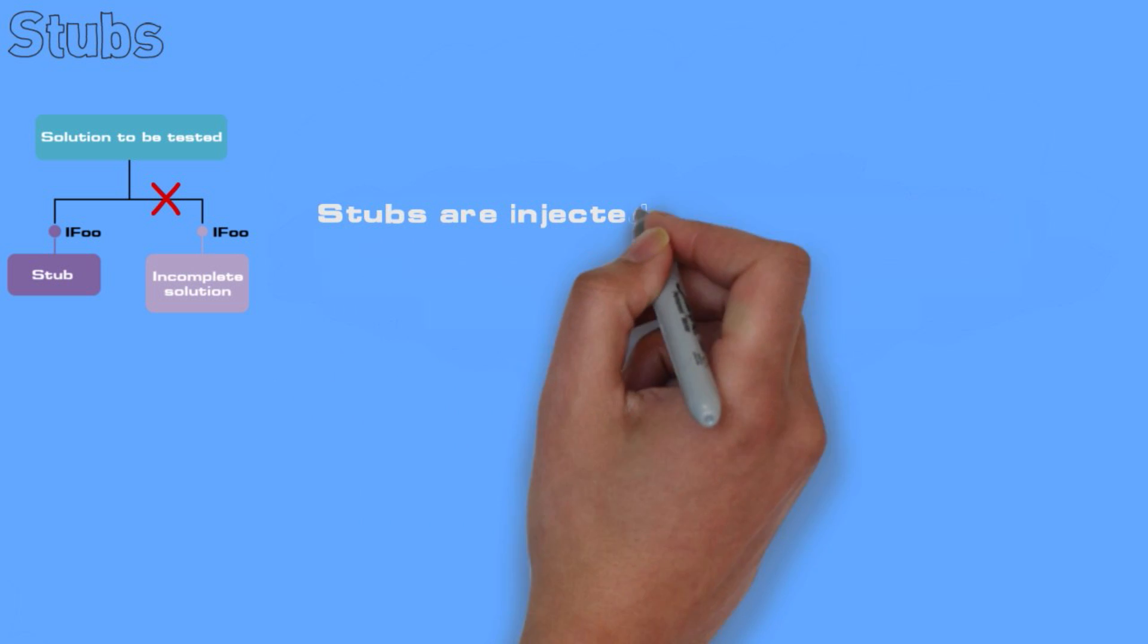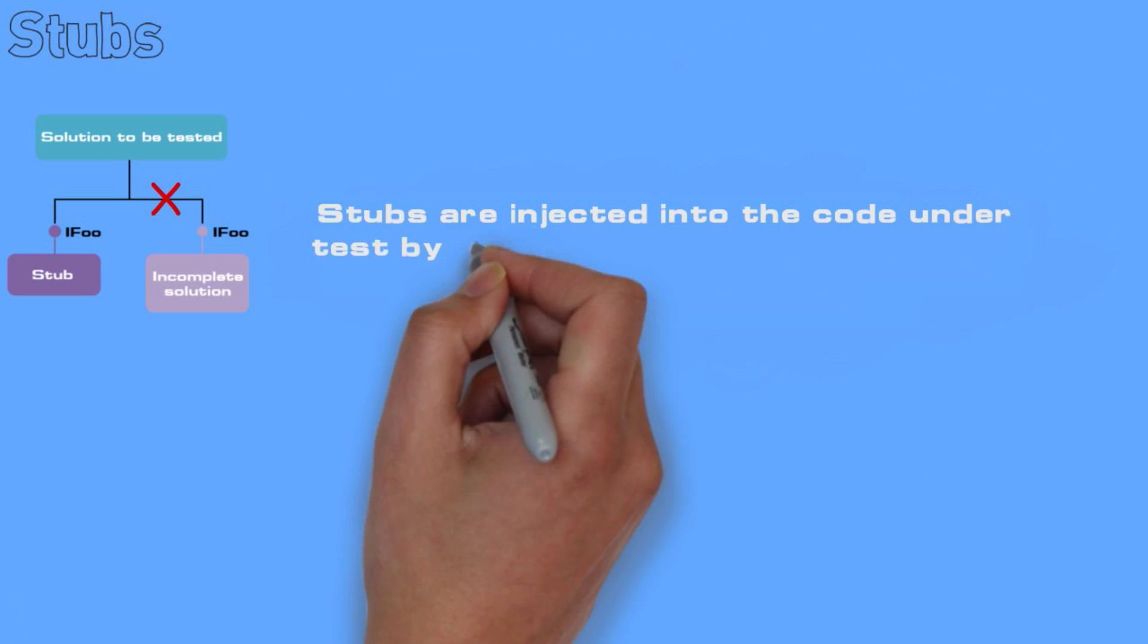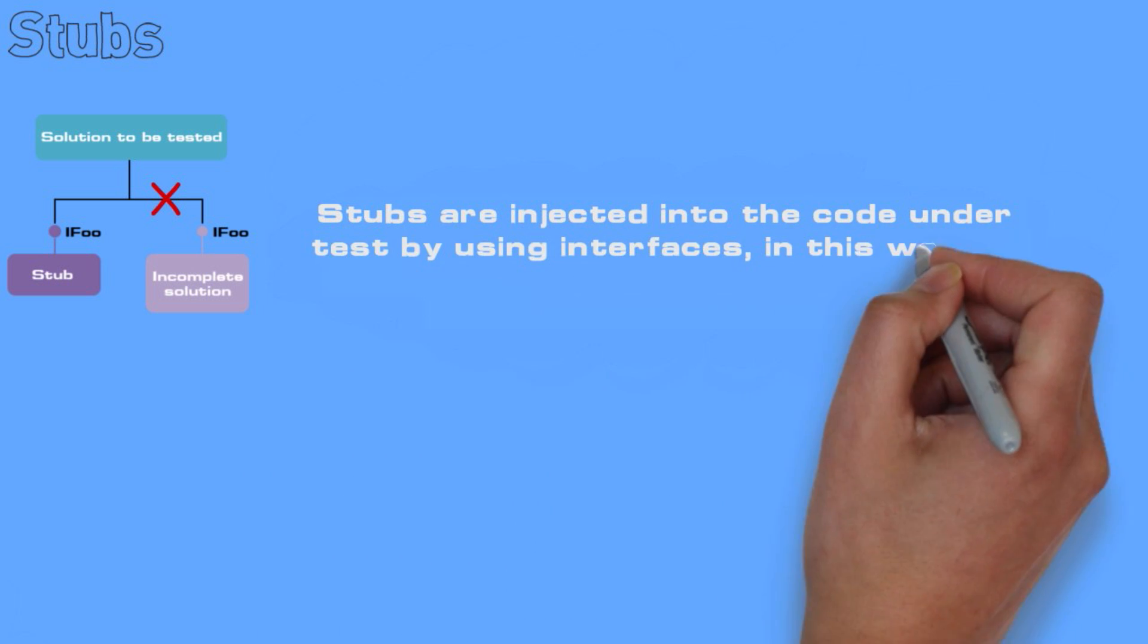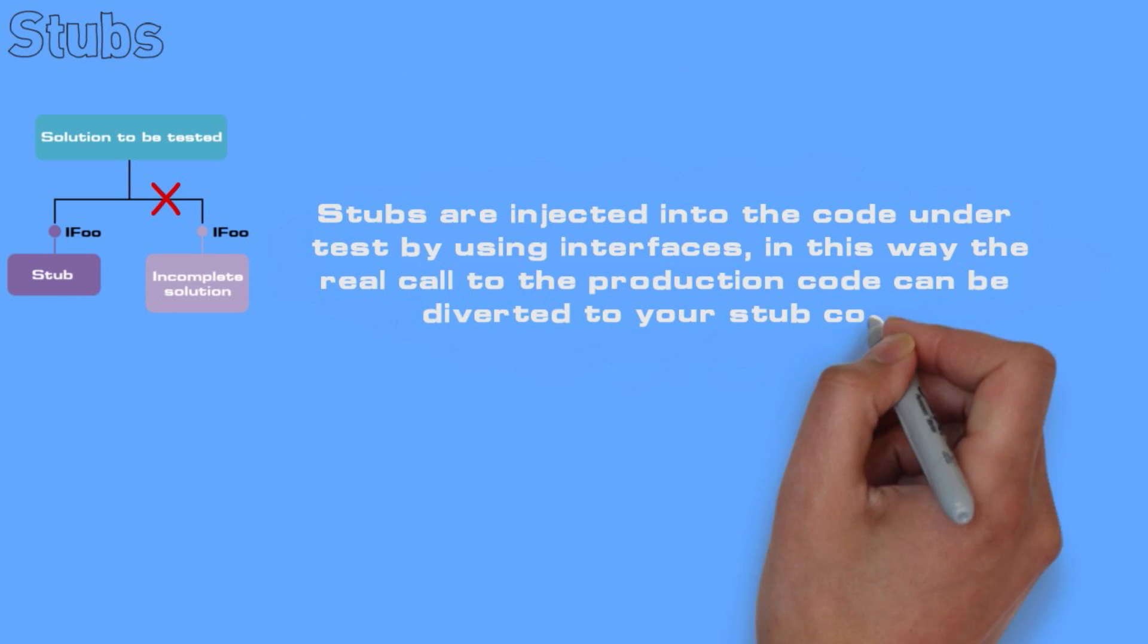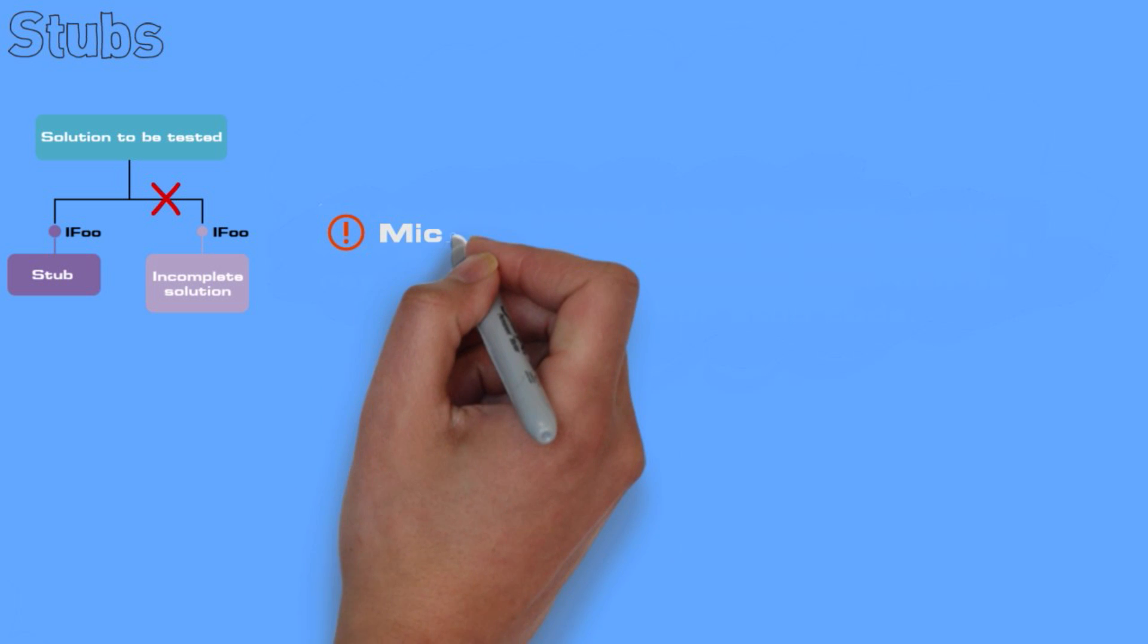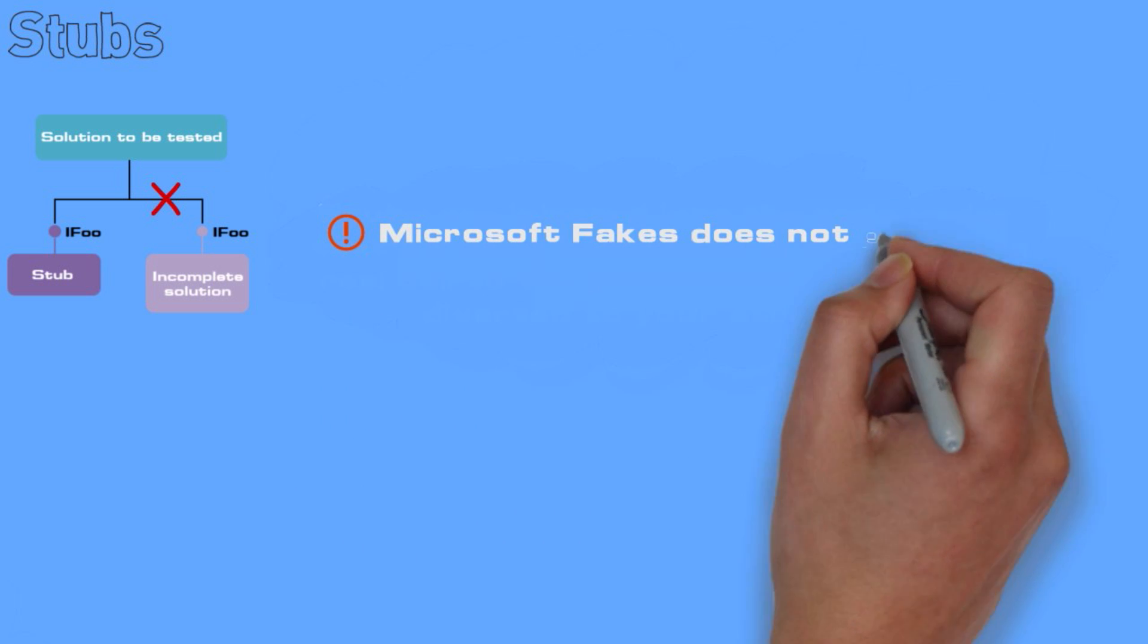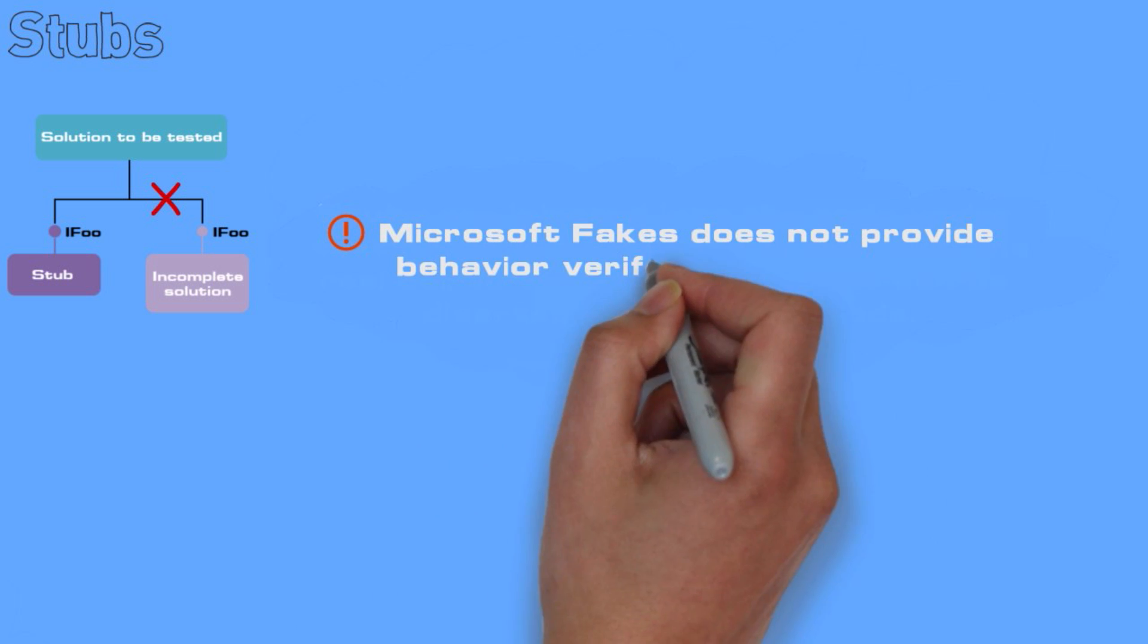Stubs are injected into the code under test by using interfaces. In this way the real call to the production code can be diverted to your stubs code. Microsoft Fakes does not provide behavior verification as in NMock and RhinoMocks.